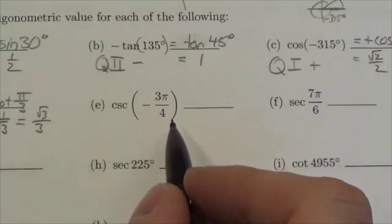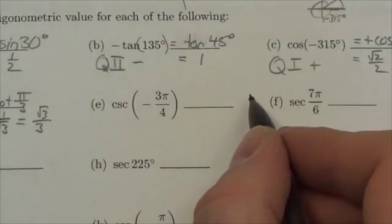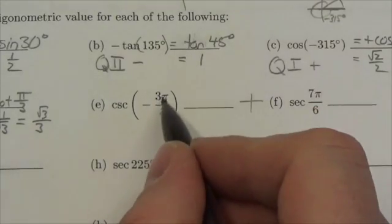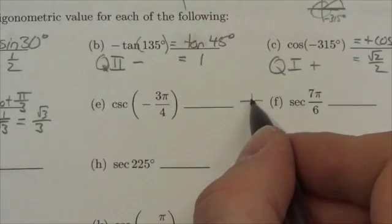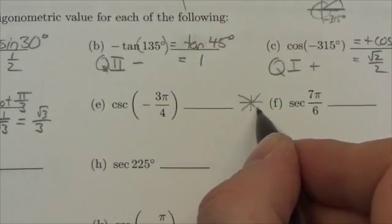So negative 3 pi over 4, let's just think about this, what quadrant am I in here? Well, to divide pi into quarters basically looks like that.